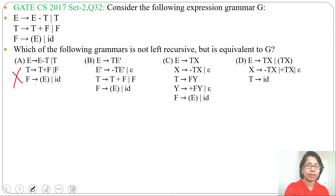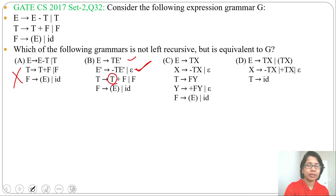Next, check option B. E derives T E-dash — this is not left recursive. E-dash derives minus T E-dash or epsilon — this is not left recursive. Then T derives T plus F or F. Here T is present on the left side, so this is left recursive. Left recursion is present, so option B is wrong.